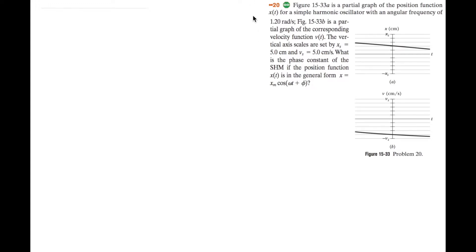In this question, figure 1533a is a partial graph of the position function x of t for a simple harmonic oscillator with an angular frequency of 1.2 radians per second. Figure 1533b is a partial graph of the corresponding velocity function v of t. The vertical axis scales are set by xs equal to 5 centimeters and vs equal to 5 centimeters per second. What is the phase constant of the simple harmonic motion if the position function x of t is in the general form x equals xm, the amplitude, multiplied by cos of omega t plus phi?